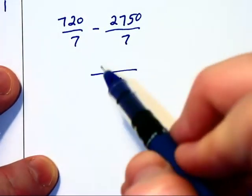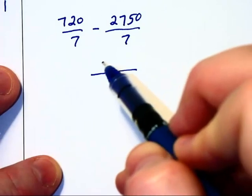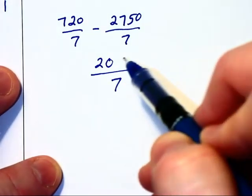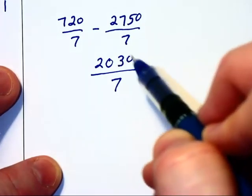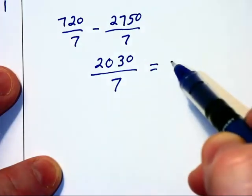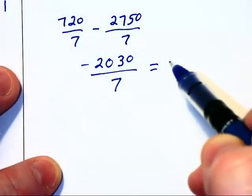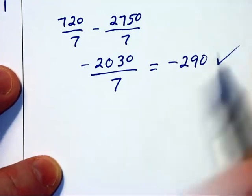When we subtract, we're going to have negative 2030 divided by 7, which is equal to negative 290. And yes,